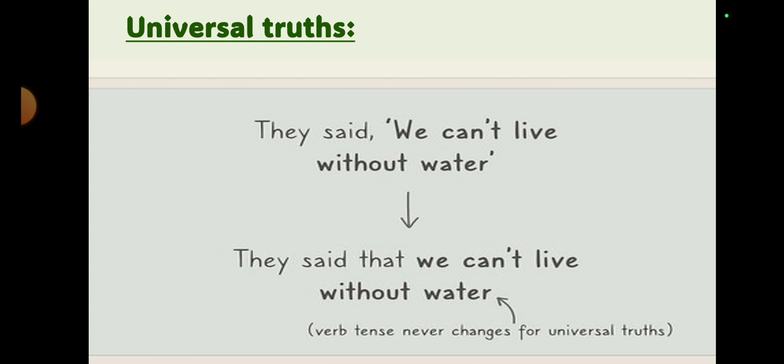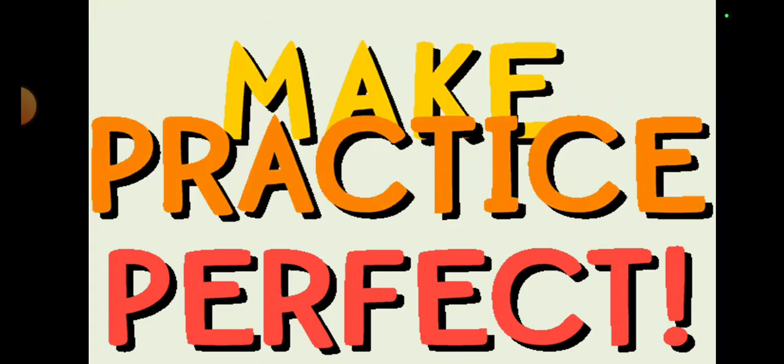And one more important thing, it is the universal truths. Remember viewers, jo universal truths hote hain woh bhi assertive sentences ki hi ek form hoti hai. To universal truths bhi jo hain woh tense ko change nahi karte, balke puri ki puri statement hum as it is likhte hain. Example is: they said we can't live without water. So water is a prerequisite for every living being. We can't live, nobody can live without water. So we can't say ke yeh present ki hai, past ki hai, future ki hi baat hai. No, all the facts and figures and factual descriptions are always written as universal truths, so they hardly change. So iska solution kya hoga: they said that we can't live without water, that's it.